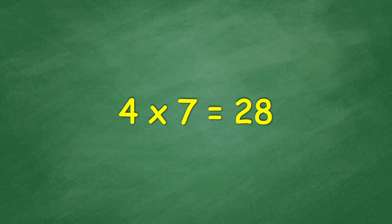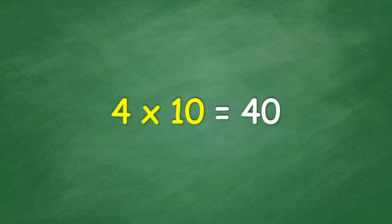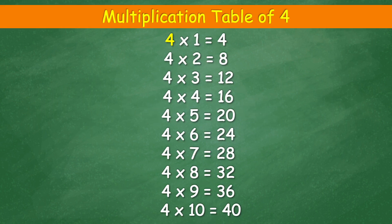Four times seven equal twenty-eight. Four times eight equal thirty-two. Four times nine equal thirty-six. Four times ten equal forty.